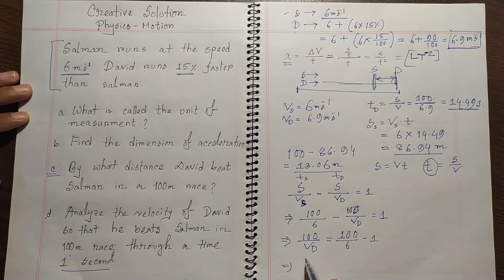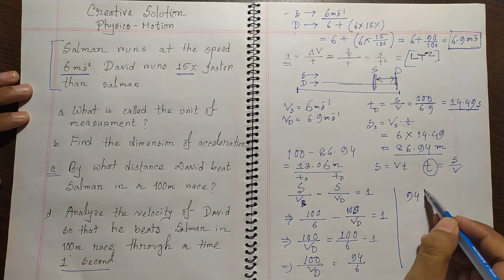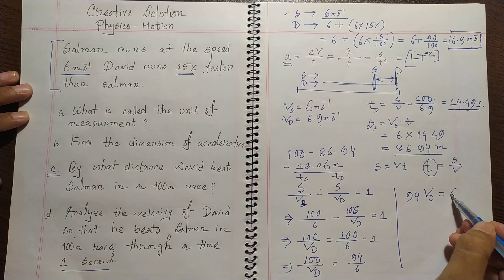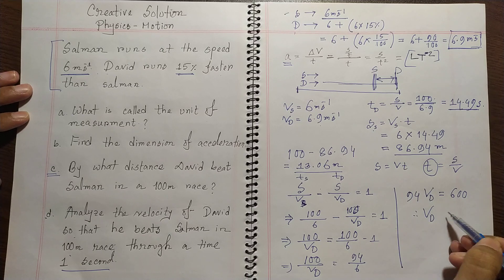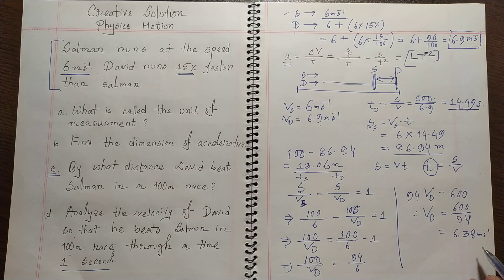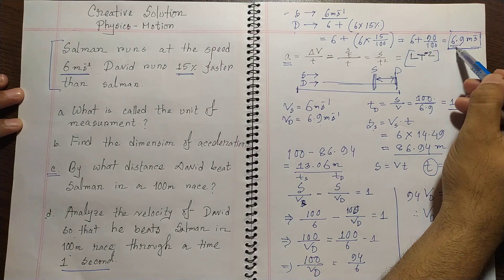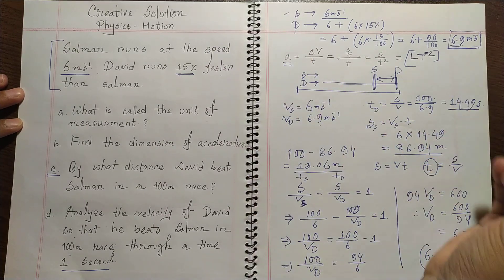So 100 over velocity of David equals 94 over 6. From this equation, 94 times velocity of David equals 600. Therefore velocity of David equals 600 over 94, which is 6.38 meters per second. That means if David's velocity is 6.38 m/s — previously it was 6.9 m/s — so you can see the difference.